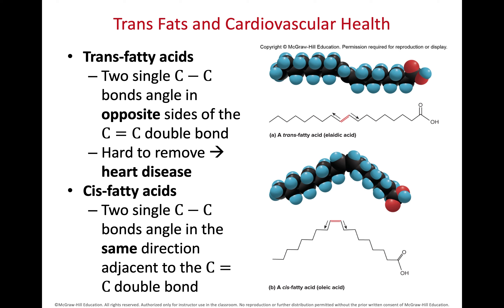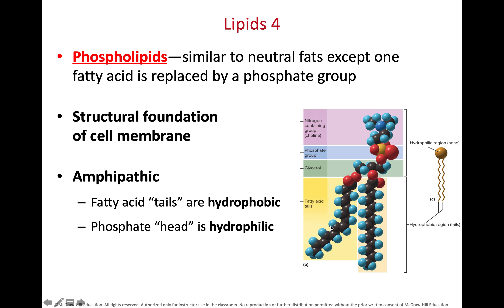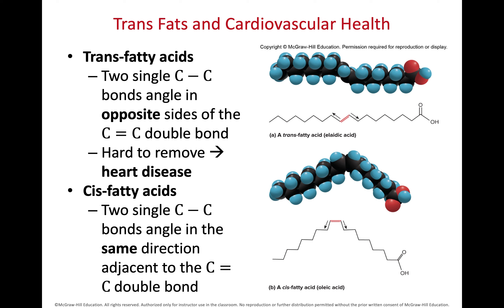If fatty acids are unsaturated, they will have a double bond. When we look at this double bond within fats, there are different ways to organize the molecule around it. If we have the carbons on opposite sides of the double bond, we call that a trans fat. Trans fats don't naturally occur in nature — all trans fats come from artificial processes. They are more stable than cis fats, harder to remove from our bodies, and are a contributor to heart disease.